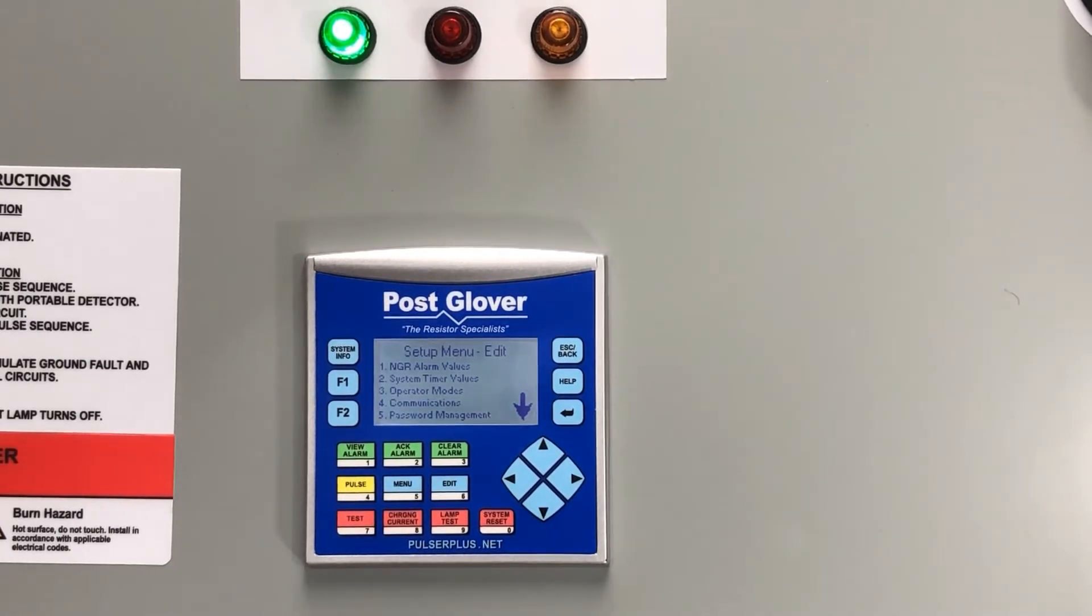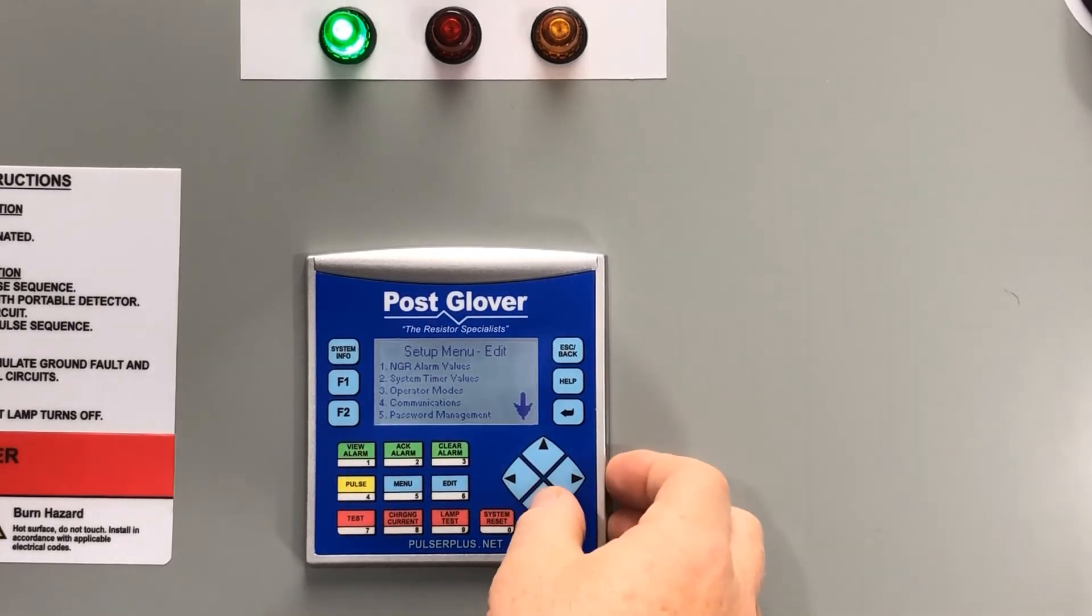This will then give you a list of functions and you can scroll down. You will see that the number 9 option is the lamp test.